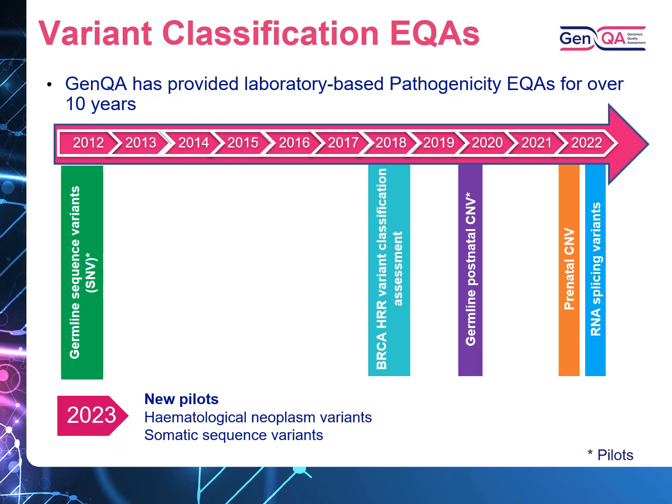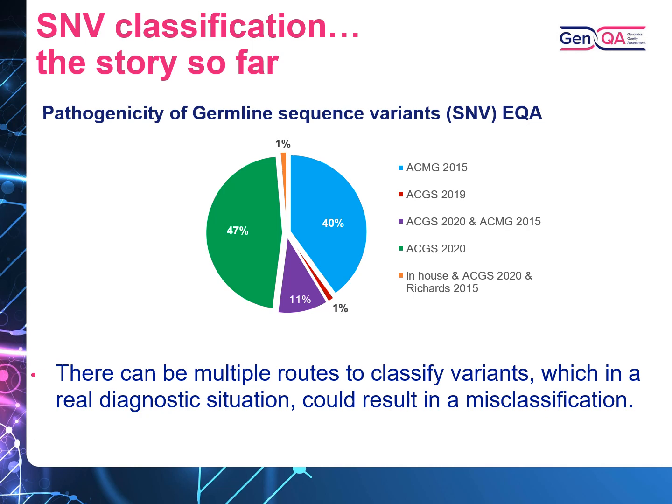GenQA has provided laboratory-based pathogenicity EQAs for more than 10 years. The EQAs cover postnatal and prenatal constitutional variants, haematological and somatic variants, as well as germline sequence and RNA splicing variants. In the pathogenicity of germline sequence variants EQA, there was a variation of classification systems used by participants. This pie chart shows how some participants used a single classification system and others a combination. There can be multiple routes to classify variants, which in a real diagnostic situation could result in a misclassification.